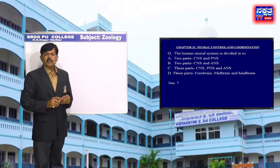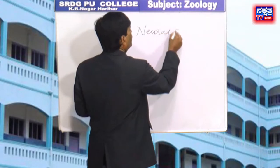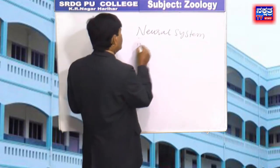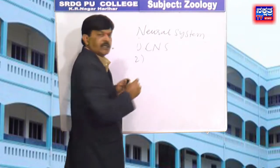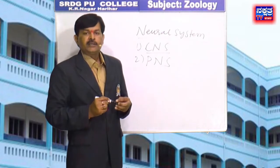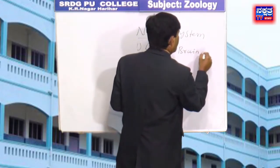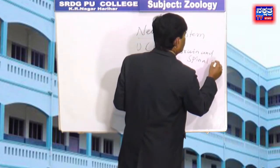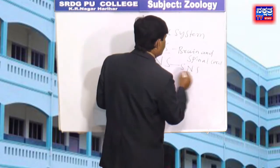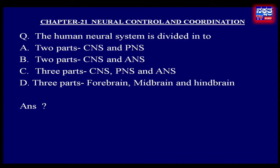In our body, different types of systems are present. The nervous system or neural system is divided into two parts: the first one is the central nervous system, and the second one is the peripheral nervous system. The central nervous system consists of brain and spinal cord, whereas the peripheral nervous system consists of the somatic nervous system and the autonomic nervous system. Therefore, option A is the right answer.